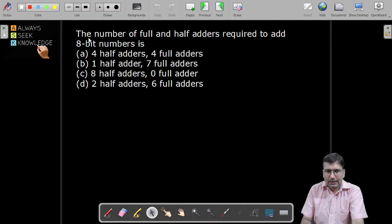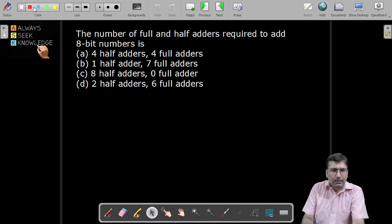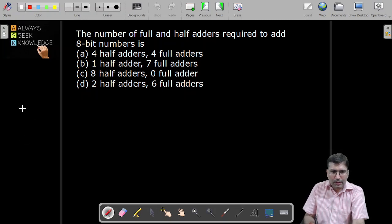In this question it has been asked: the number of full adders and half adders required to add 8-bit numbers. So let's assume that we are having two numbers and both are having 8 bits.